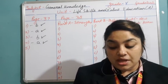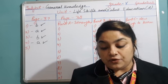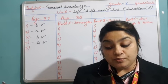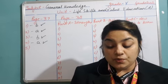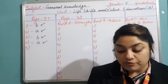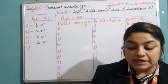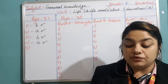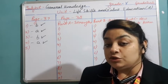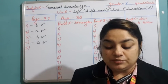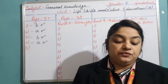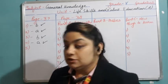Fifth situation: you are waiting to cross the road and the traffic light is red for pedestrians, but a group of people is crossing the road. What should you do — cross with the group or wait for the light to turn green? Just because others are doing something wrong doesn't mean you should join them. You should wait for the light to turn green. The answer is B.